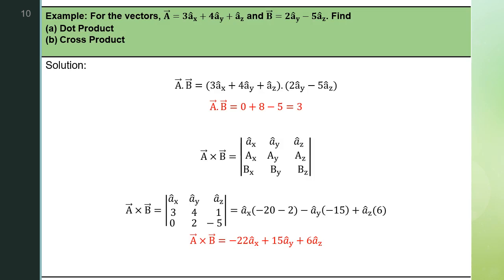Here is a simple example finding the dot product and cross product of two vectors A and B. For the dot product, we multiply the corresponding components: 3×0 + 4×2 + 1×(−5) = 0 + 8 − 5 = 3. So A · B = 3. For A × B, we find the determinant with first row ax-cap, ay-cap, az-cap; second row 3, 4, 1; third row 0, 2, −5. This gives ax-cap(−20 − 2) − ay-cap(−15 − 0) + az-cap(6 − 0) = −22 ax-cap + 15 ay-cap + 6 az-cap. Comparing the two answers: the dot product gives a scalar value, and the cross product gives a vector.